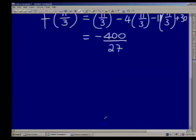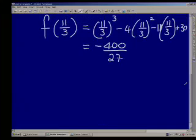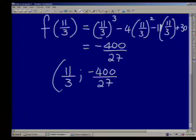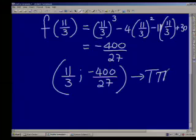Just use a calculator and you get a value of negative 400 over 27. So what we now have is this: 11 thirds and negative 400 over 27. That is my x and my y value of my turning point. One of them. That is one of my turning points.